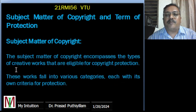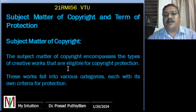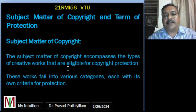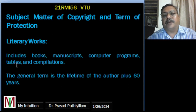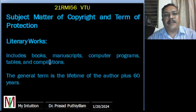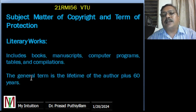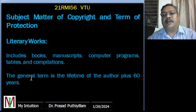The subject matter of copyright encompasses the types of creative works eligible for copyright protection, which fall into various categories each with its own criteria. Literary works include books, manuscripts, computer programs, tables, and compilations. The general term of protection for literary works is the lifetime of the author plus 60 years; after that it enters the public domain.